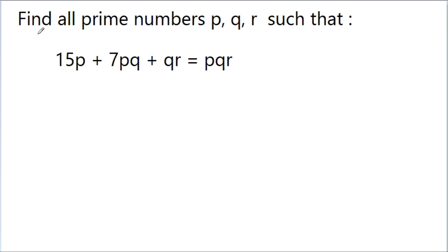In this video, we have to find prime numbers p, q, r such that 15p + 7pq + qr is equal to pqr.